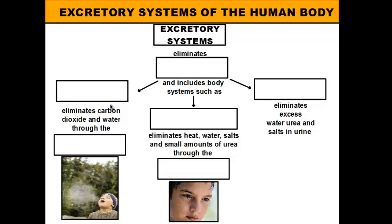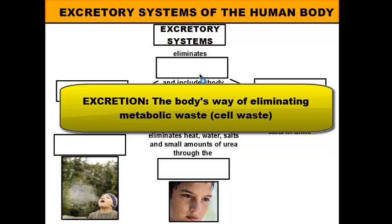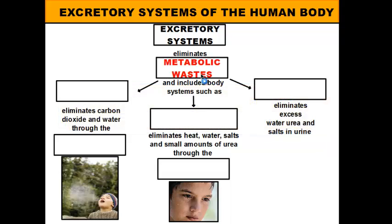Welcome to the video on the excretory systems of the human body. Tonight we're going to talk about the process of excretion. Excretion is the body's way of eliminating what are called metabolic wastes from the body. We don't have one central excretory system to do this — we actually have three body systems that carry out excretion for us. We're constantly trying to get rid of wastes because they can be very poisonous to us if they get too high in concentration inside our body.